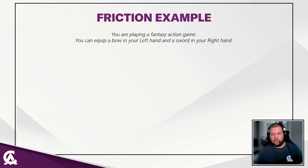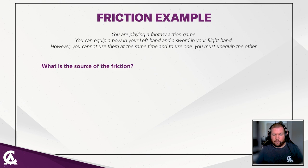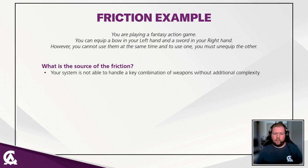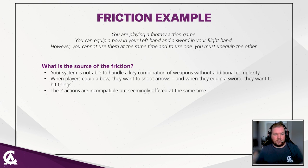A good example of friction: you're playing a fantasy action game with a bow in your left hand and a sword in your right hand, but you cannot use them at the same time — to use one you have to unequip the other. The source of friction is that your system can't handle that key combination of weapons without additional complexity. When the player equips a bow they want to shoot arrows, when they equip a sword they want to hit things, but the two actions are incompatible yet seemingly offered at the same time.